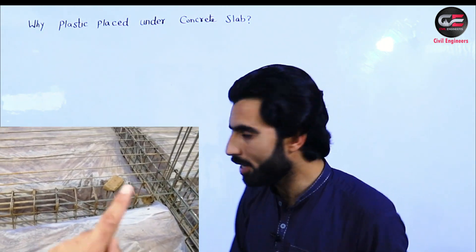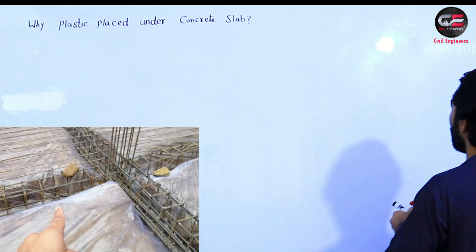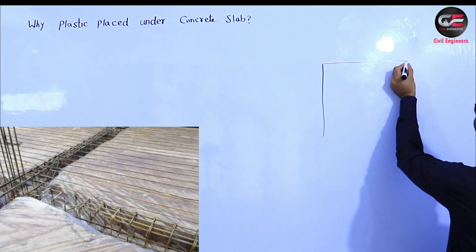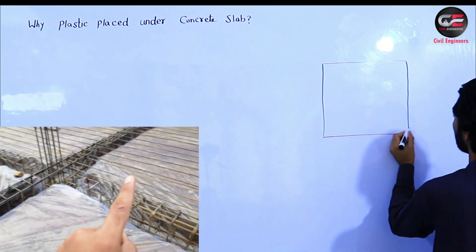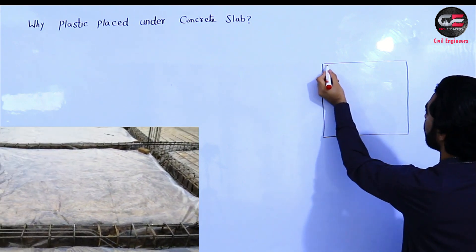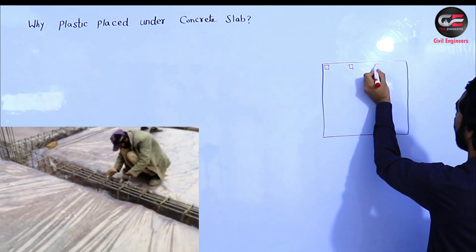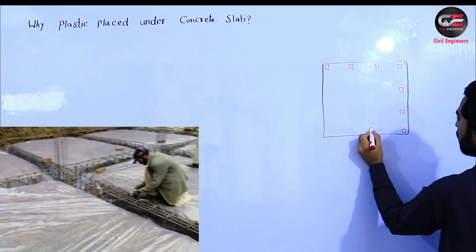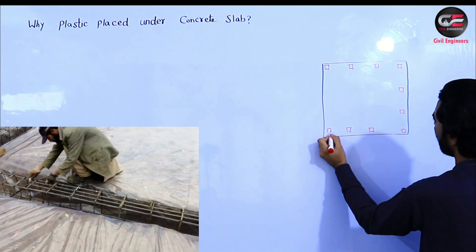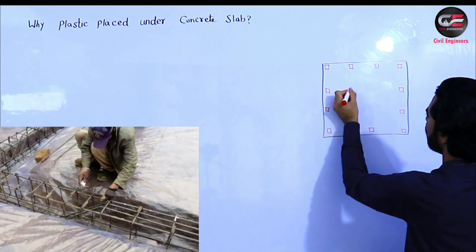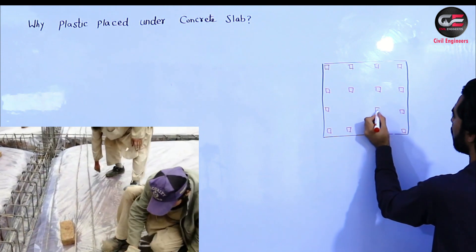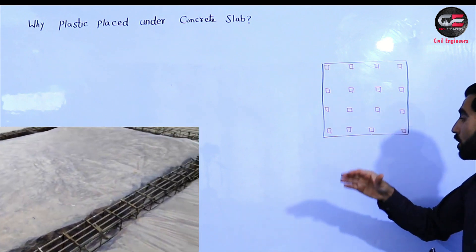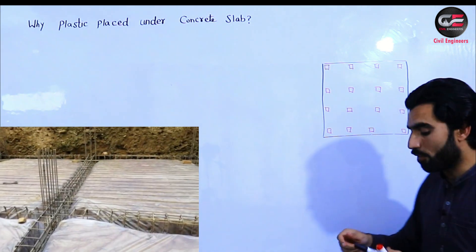Let's start. Here you can see, for example, a raft foundation — raft foundation and mat foundation are the same. Here you can see these are columns, and columns also have beams. My diagram is not perfect, but it's just to clear the concept.